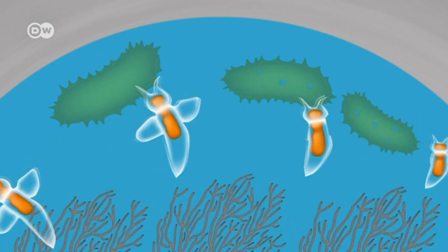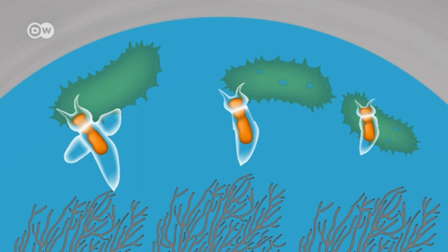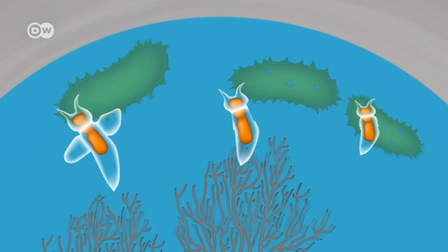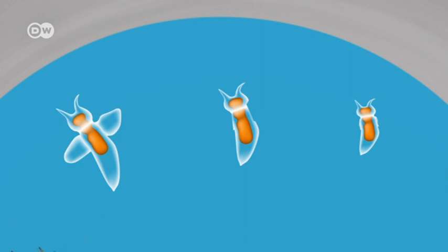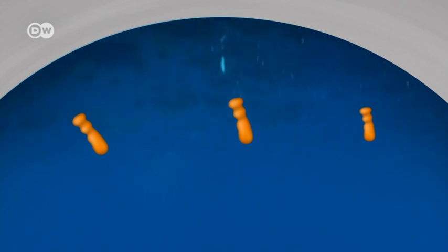Their shells can dissolve in acidic seawater. Scientists have supplied the proof. They simulated the concentration of absorbed carbon dioxide expected in our seas in the year 2100, and the aquatic snail's protective shell dissolved within two days.